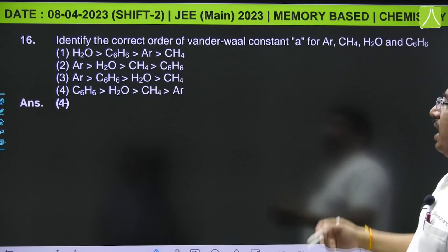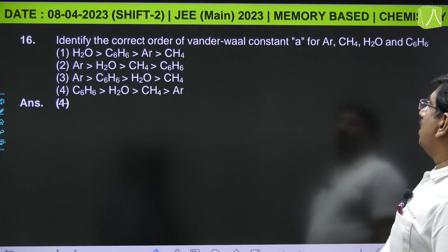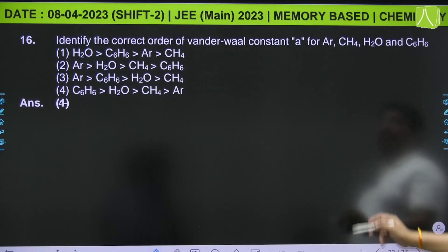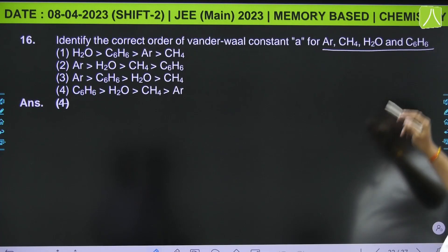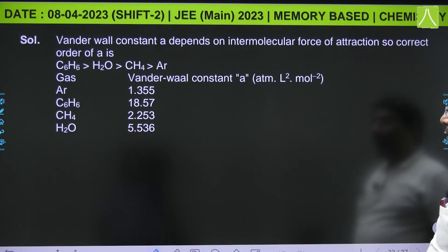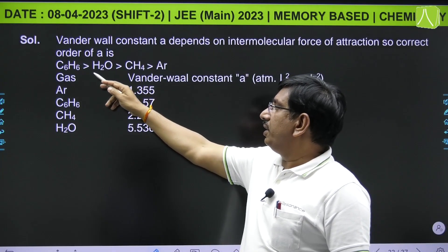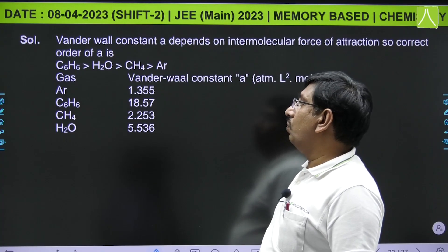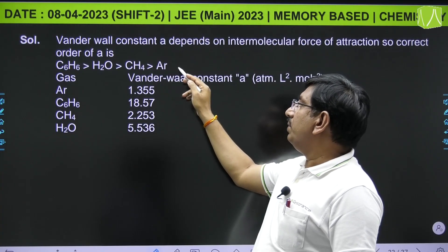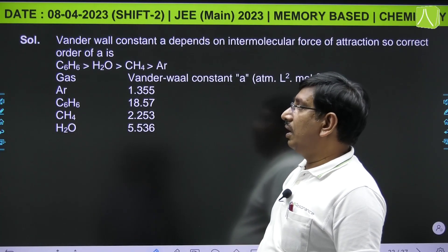Next, identify the correct order of van der Waals constant 'a' for argon, methane, water, and benzene. The van der Waals constant 'a' values: benzene greater than water greater than methane greater than argon.